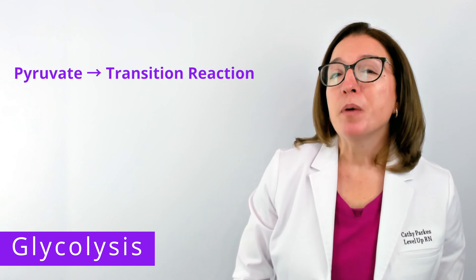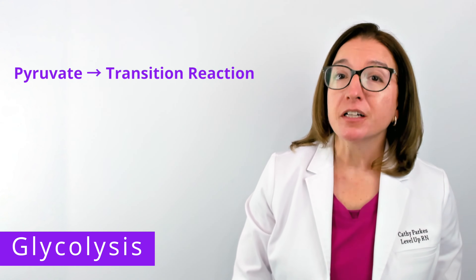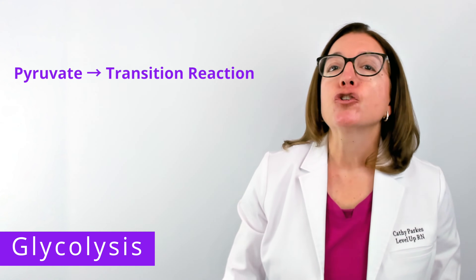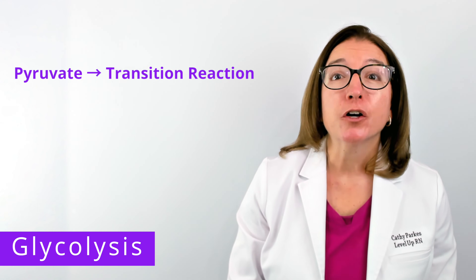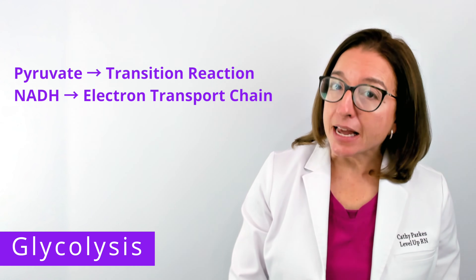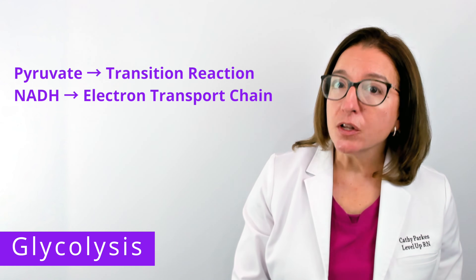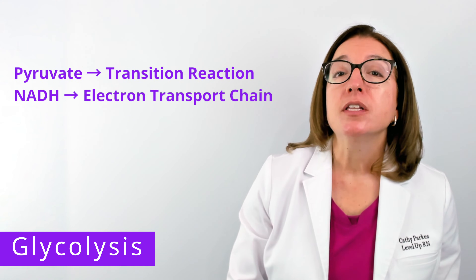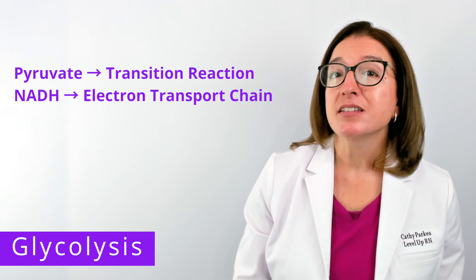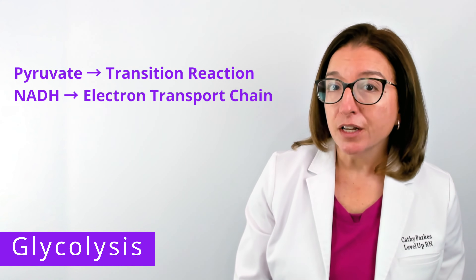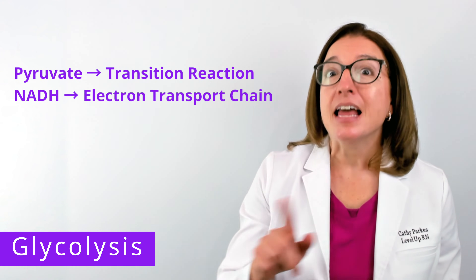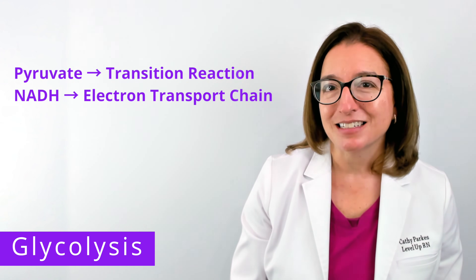The two pyruvate molecules produced during glycolysis will go on to the transition reaction, which we are going to talk about next. The two NADH molecules will go on to the electron transport chain, which is part of oxidative phosphorylation, which we'll be talking about in the next video in this playlist.